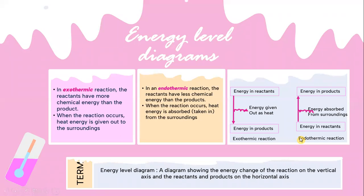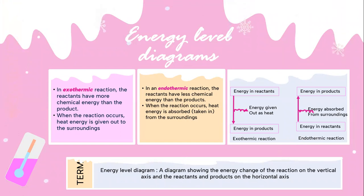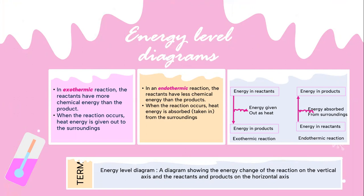Let's look into energy level diagrams. In an exothermic reaction, the reactants have more chemical energy than the product. When the reaction occurs, heat energy is given out to the surrounding.